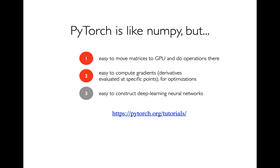PyTorch is a lot like NumPy, where we have matrices that we're going to be calling tensors. It's going to feel very familiar — you do a lot of the same things, like slicing and multiplying. But there are a few differences. One is that it's going to be really easy to move your matrices to a GPU, do computations there, and then move them back to your CPU.